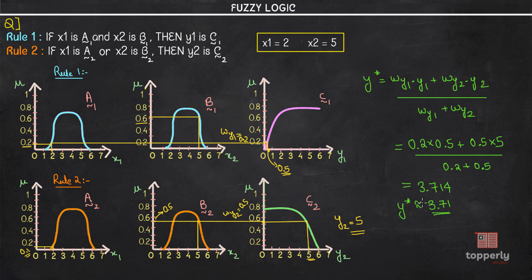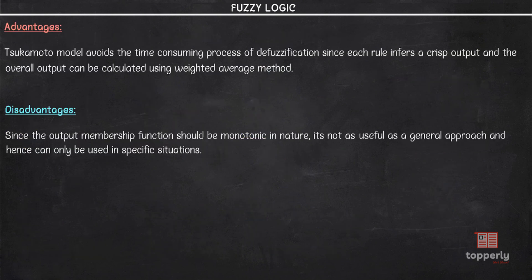This is how you solve with the Sukumoto method. There are a few advantages and disadvantages to the Sukumoto model. The advantage is that it avoids the time-consuming process of defuzzification since each rule infers a crisp output and the overall output can be calculated using the weighted average method. The disadvantage is that since the output membership function must be monotonic in nature, it is not very useful as a general approach and can only be used in specific situations.